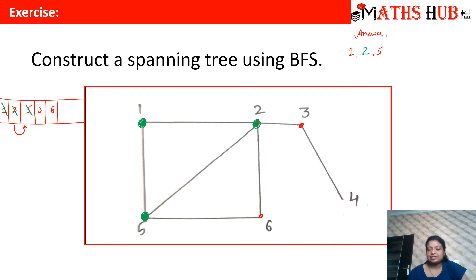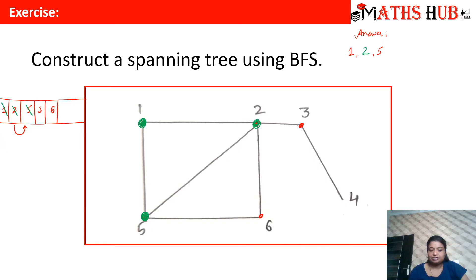After traveling to vertex 5, we check its neighbors and see that vertex 6 is adjacent to it. Vertex 6 has already been inserted in the queue. Now in the queue we have vertex 3, so let us go to vertex 3. We write vertex 3 in the answer. After traveling to vertex 3, we explore it and see that vertex 4 is an undiscovered neighboring vertex, so we insert vertex 4 into the queue.